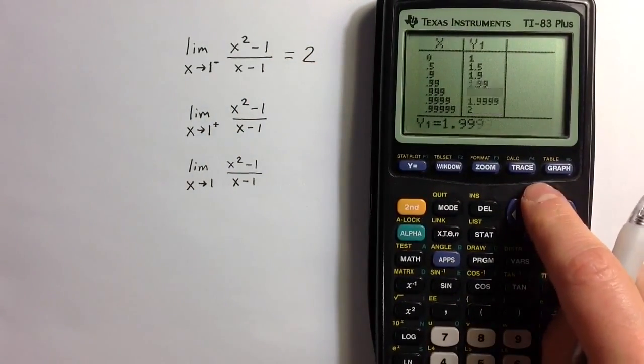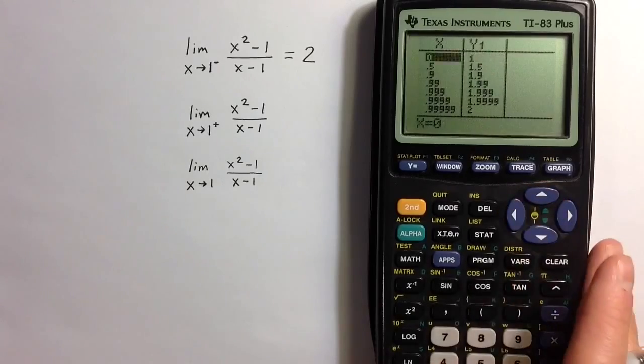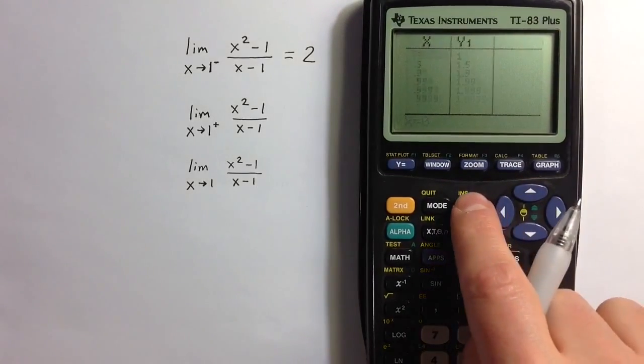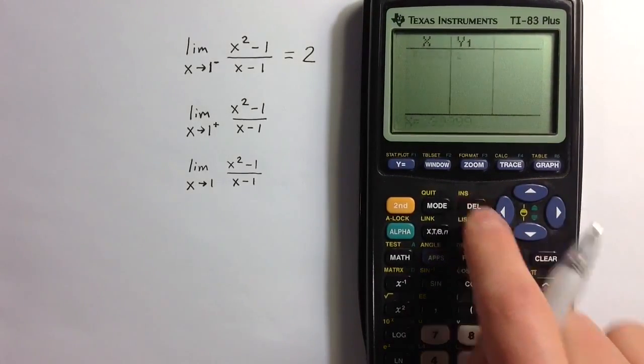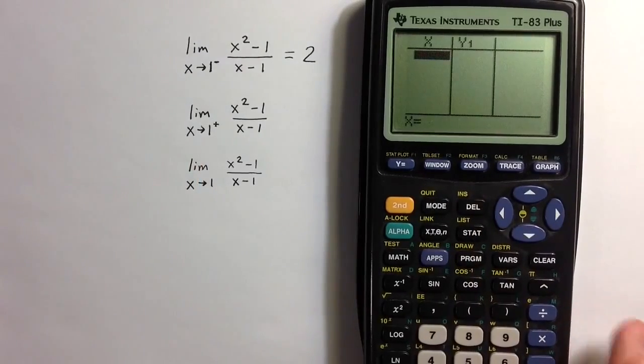Going back up to the top of the table, let me delete these x values and enter in values that approach 1 from the right. So I can enter values like 1.1, 1.01, 1.001, and so on.